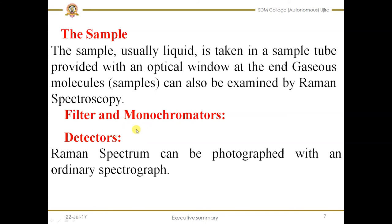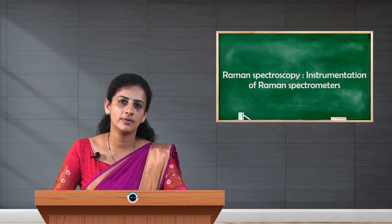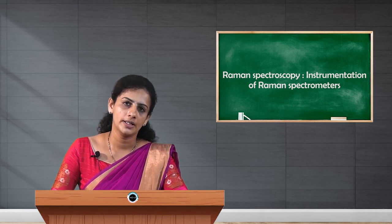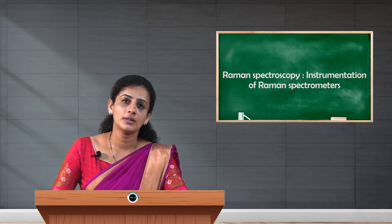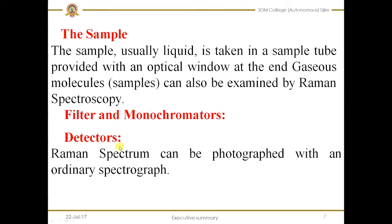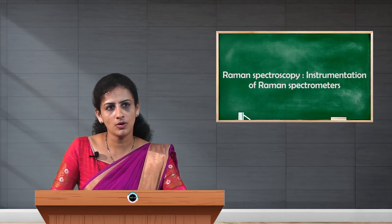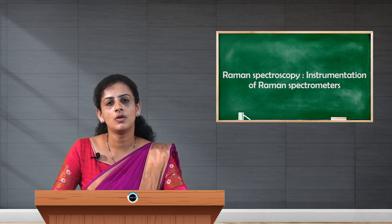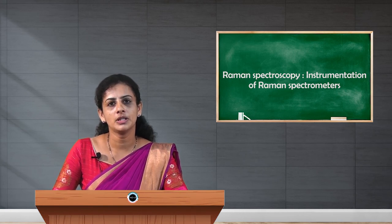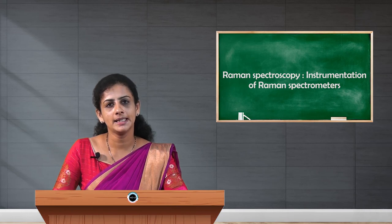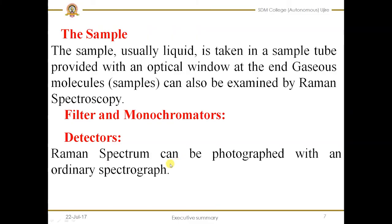Next are the filters and monochromators. Monochromators or filters are used to remove the high wavelength radiation, because if higher wavelength radiation is used, it dissociates the molecules. So in order to avoid this, filters or monochromators are used. The last component is the detector. The Raman spectrum can be photographed with an ordinary spectrograph. The easiest way is to gather all the scattered radiation escaping from the optical window at the other end of the sample tube, then pass that scattered light through the prism and then through the photographic plate where the spectrum is recorded.